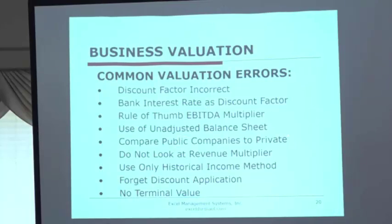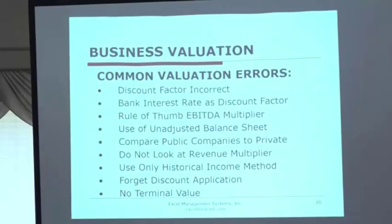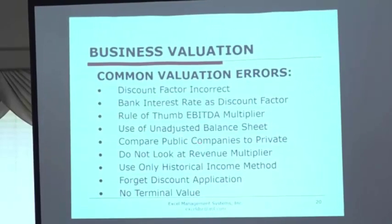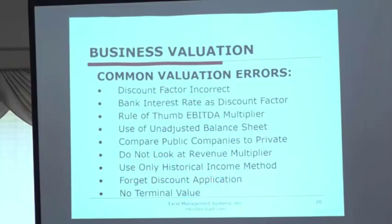How do you compare public companies to private and say, this is what I'm worth because this is what the public companies are worth? They don't look at the revenue multiplier, they just look at an EBITDA multiplier. They use only the historical number instead of looking at what the future numbers might be, or the synergistic numbers. And they forget the discount for the situation, and they use no terminal value.